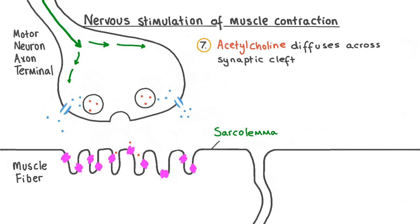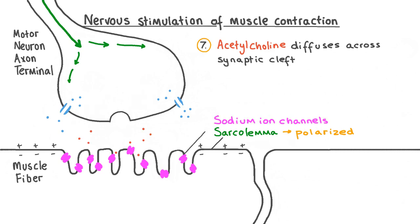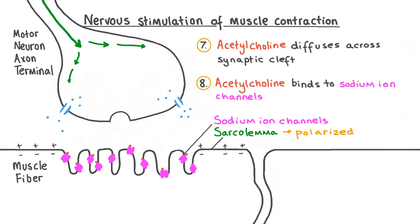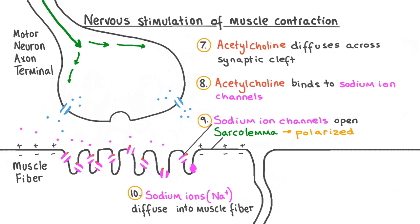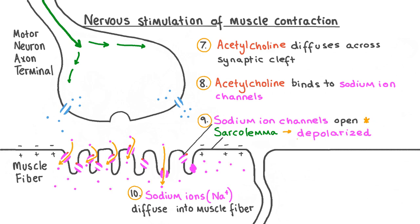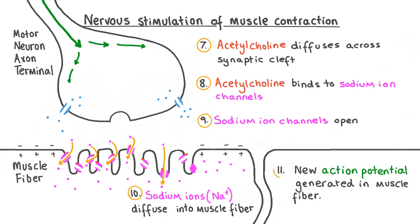The plasma membrane of a muscle fibre is called the sarcolemma. At rest, the space outside the sarcolemma is more positively charged than the space inside — at this point it's referred to as polarised. There are sodium ion channels embedded in the sarcolemma which contain acetylcholine binding sites. Once acetylcholine diffuses across the synaptic cleft, it attaches to these binding sites causing the sodium ion channels to open. This allows sodium ions to diffuse from the synaptic cleft, where they're in high concentration, into the muscle fibre, increasing the positive charge inside the sarcoplasm. When enough sodium ions diffuse in, the sarcolemma becomes depolarised and a new action potential is generated in the muscle fibre.